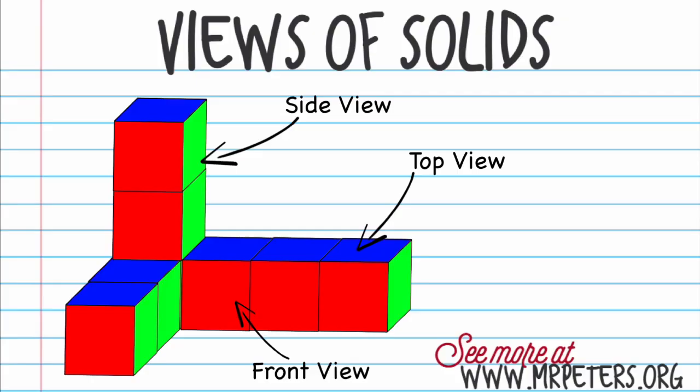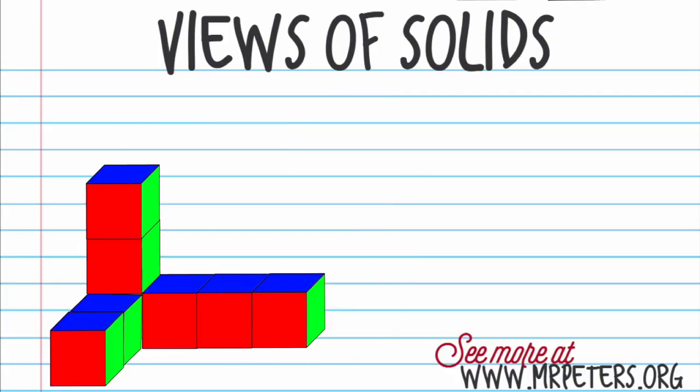So how can we draw that out? When we're drawing this out, we're using three different, three separate drawings to look at this. So now we're first going to start with our front view.